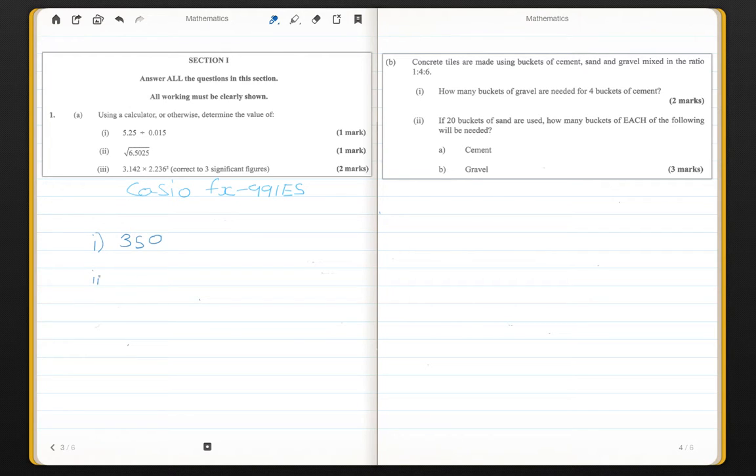For question 2, the answer is 2.55 or 2 and 11 twentieths. So depending on your calculator, you can get either of these values. They're both the same. The last one now is the only one that I'm going to spend some time on.